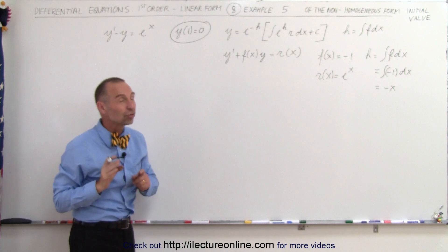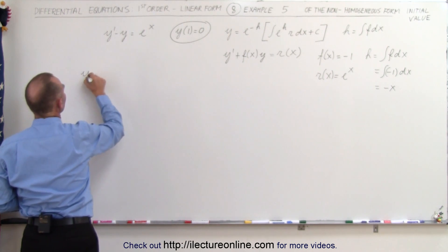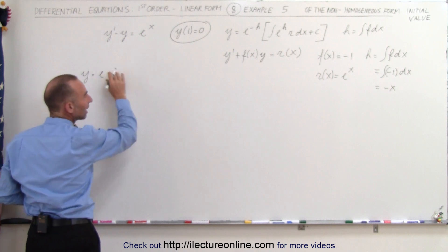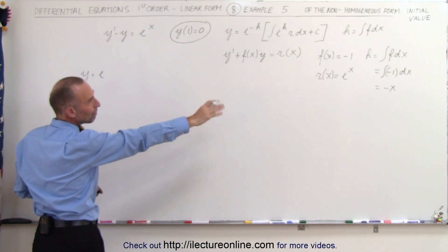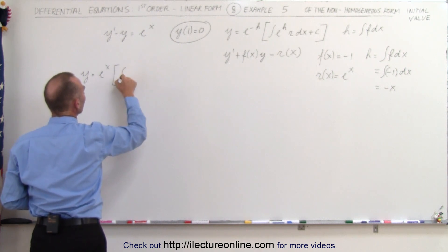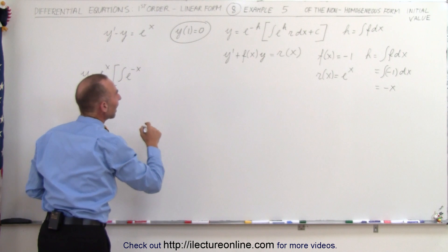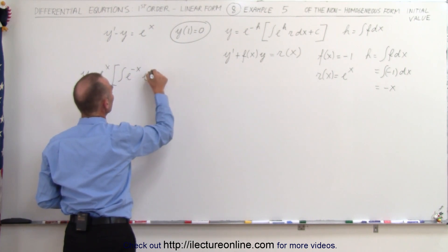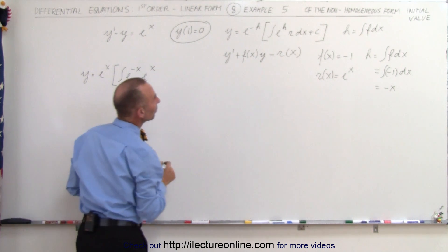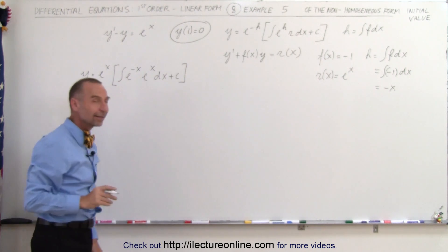So now let's go ahead and plug that into the general solution right here. So we have y is equal to e to the minus h, and since h is minus x, that would be e to the x, times r, r is e to the x, and we need a dx plus a constant of integration.